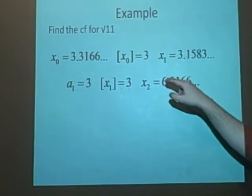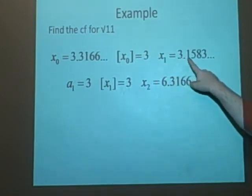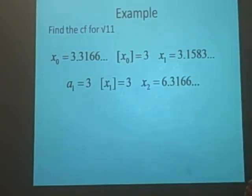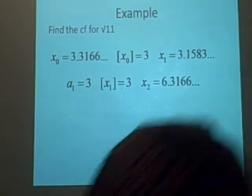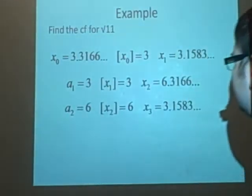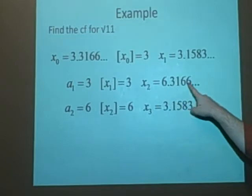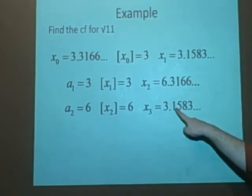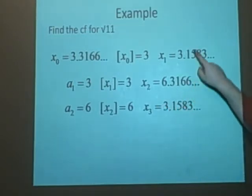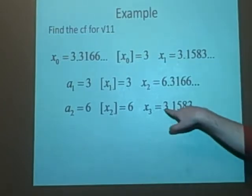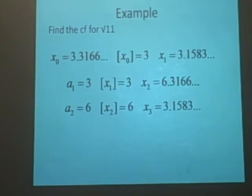x2, this is 1 over 0.1583, is 6.3166. So we've got the integer part of that is 6, which means a2 is equal to 6. And then we do the same again, we do 1 over 0.3166, which gives us 3.1583. Now this is exactly the same as up here, so we know this is just going to keep repeating. It's not stopping, because if it did, then we'd just get a proper integer here. But it's going to keep repeating.